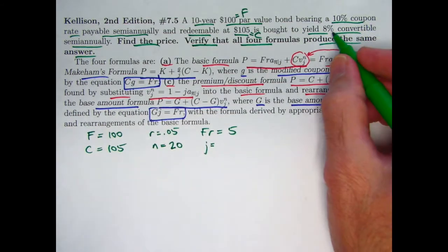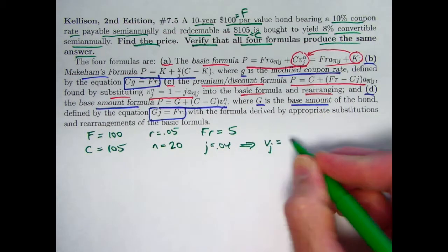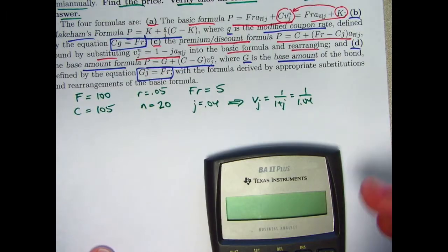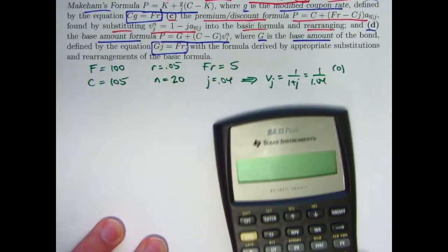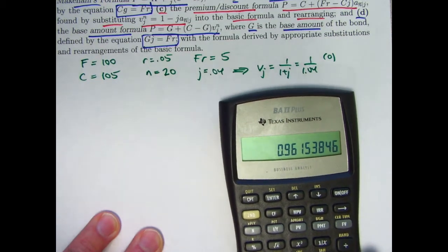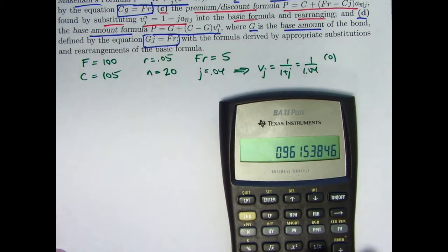J, the yield rate, semi-annual would be 8% divided by 2 is 4%. This would imply that V sub J is 1 over 1 plus J is 1 over 1.04. I'm going to make use of calculator storage. You may want to write these numbers down. 1.04, take its reciprocal. There it is. That's V. I'm going to store that in register 0, but you may want to write it down. So I'm going to try to save time by not writing things down. By the way, I think I maybe mentioned this before. Other books do use I for the semi-annual yield rate. It's Broverman's book who uses J. In fact, Kellison uses I. So that's stored in register 0.